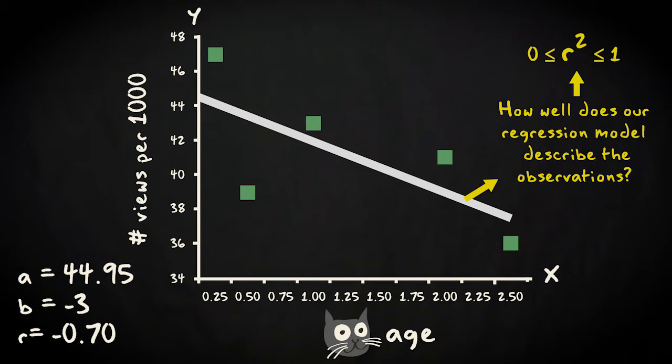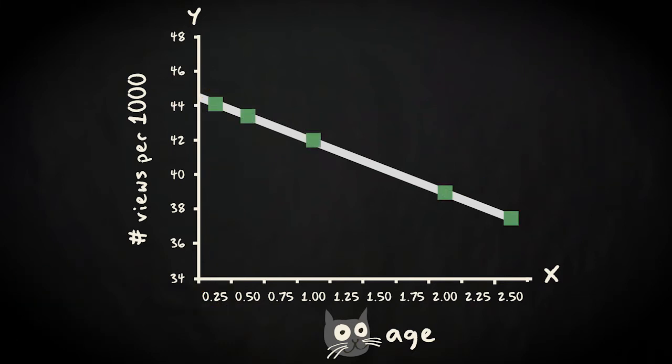Regression tells us whether variation in the predictor goes together, or co-varies, with variation in the response variable. For example, when lower cat age goes together with higher video popularity. If cat age co-varies perfectly with video popularity, then all the variation, each change in video popularity is perfectly predicted or explained by a corresponding change in cat age.